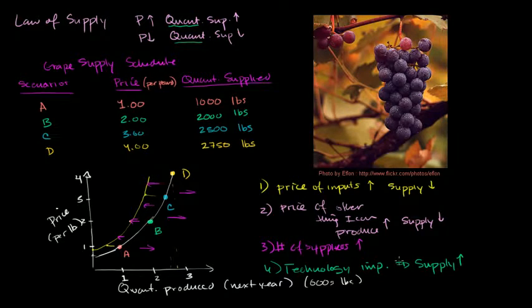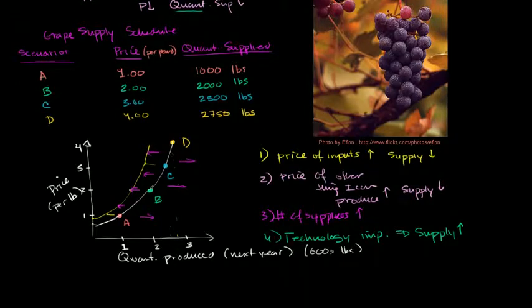And then the last one I'll cover, and it's a little bit strange in the grape analogy, is the expected future prices. So the expected future prices. Expected future prices. Price expectations. And let's go away from the grapes, because grapes are perishable goods. They go bad.